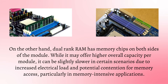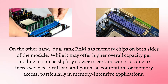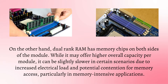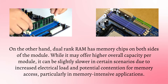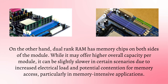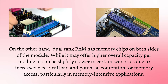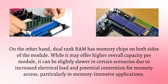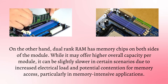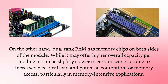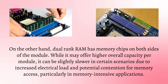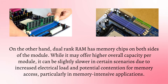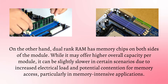On the other hand, dual rank RAM has memory chips on both sides of the module. While it may offer higher overall capacity per module, it can be slightly slower in certain scenarios due to increased electrical load and potential contention for memory access, particularly in memory-intensive applications.